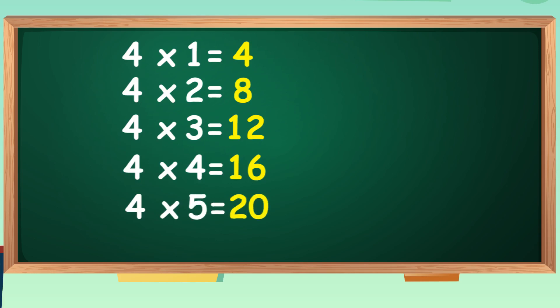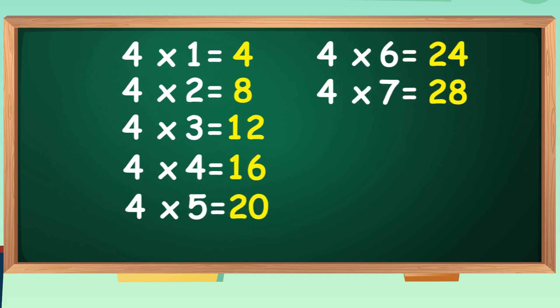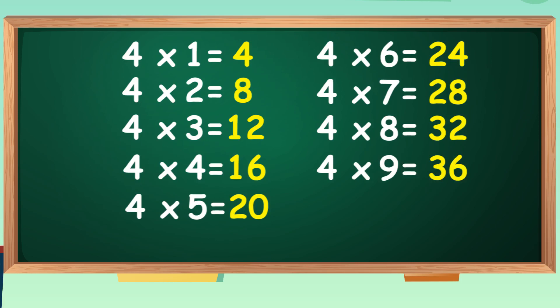Four fives are twenty. Four sixes are twenty-four. Four sevens are twenty-eight. Four eights are thirty-two. Four eights are thirty-two. Four nines are thirty-six. Four nines are thirty-six. Four tens are forty. Four tens are forty.